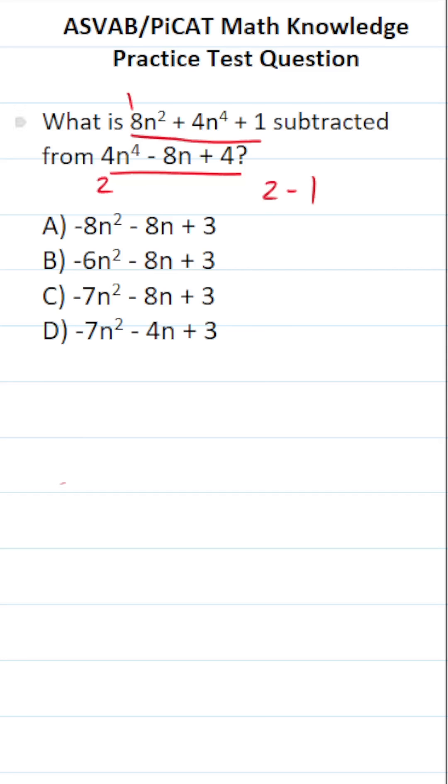So again, this one says, what is 8n squared plus 4n to the fourth plus 1 subtracted from 4n to the fourth minus 8n plus 4? So it's going to look like this: 4n to the fourth minus 8n plus 4, and from that we're subtracting this entire polynomial 8n squared plus 4n to the fourth plus 1.